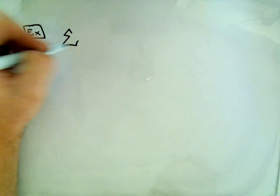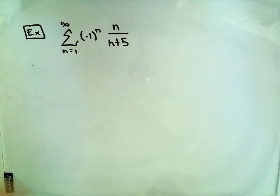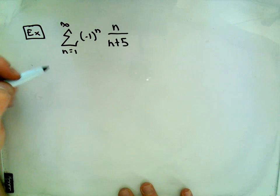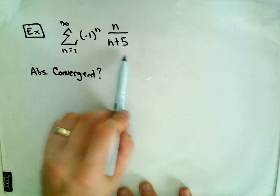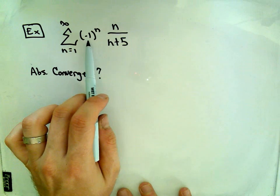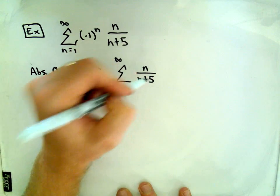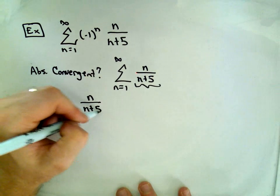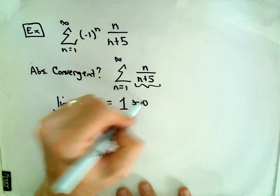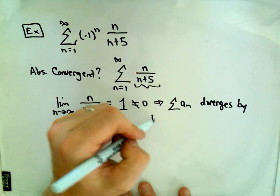Let's look at one last series — same question: absolutely convergent, conditionally convergent, or divergent? Suppose it's n equals 1 to infinity of negative 1 to the n times n over n plus 5. If I ask whether it's absolutely convergent, I put it in absolute value, which gets rid of the negative 1 to the n, leaving the series n equals 1 to infinity of n over n plus 5. By the test for divergence, the limit as n goes to infinity of n over n plus 5 simply equals 1, which is not 0 — that means the series diverges by the test for divergence.